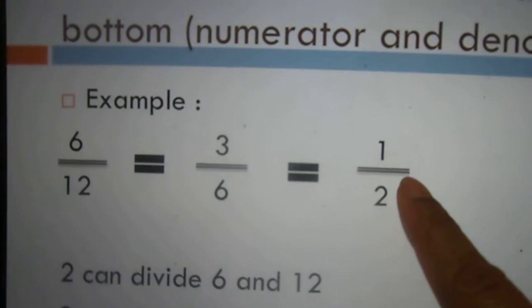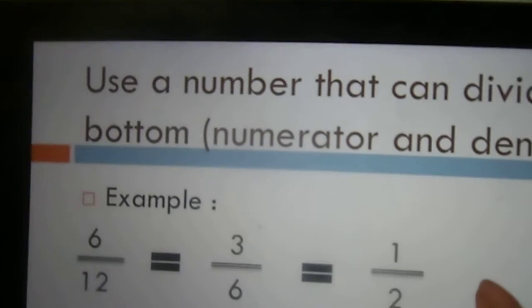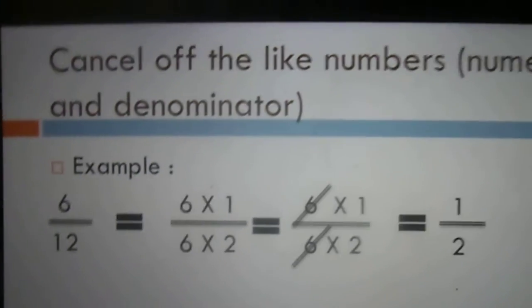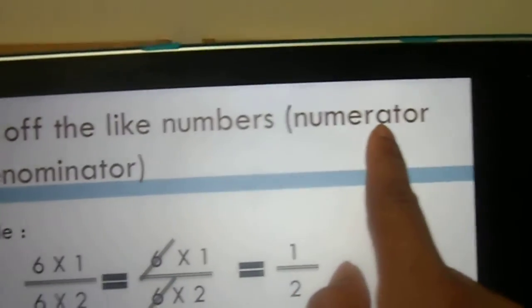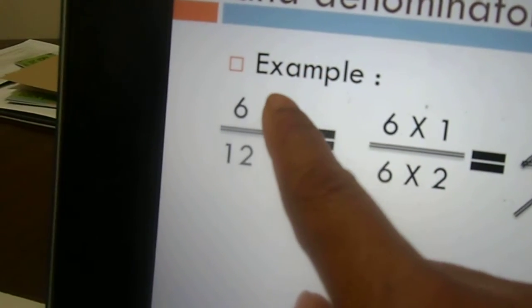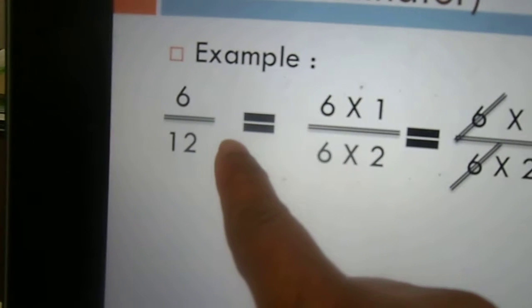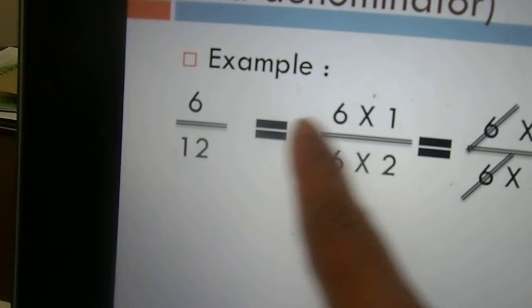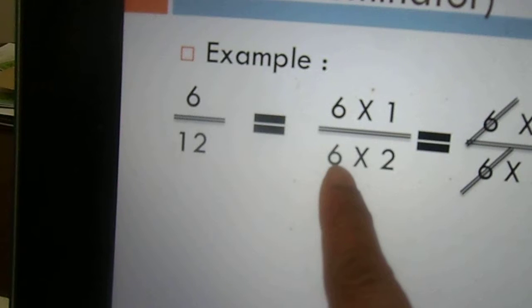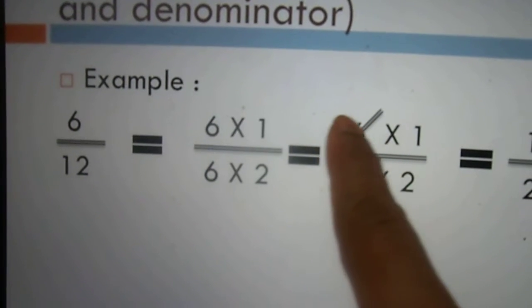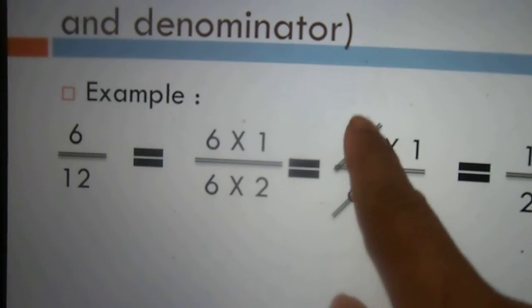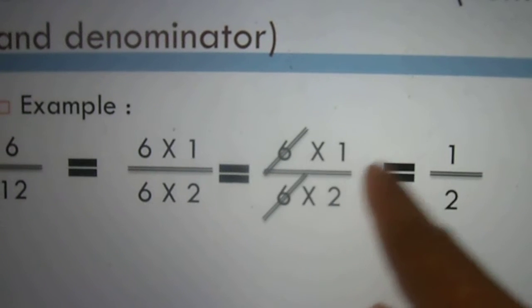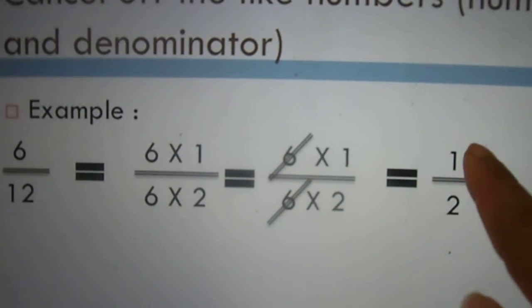Because nothing can divide 1 over 2 further, let's look at the second step with the same example. This step says cancellation of like numbers, both at the top and at the bottom — the numerator and the denominator. We have 6 over 12. 6 is the same as 6 times 1, and 12 is the same as 6 times 2. Since 6 and 6 are like numbers, we cancel both 6s, and the answer is still 1 over 2.